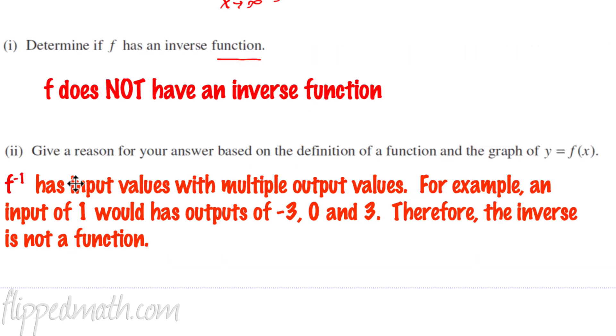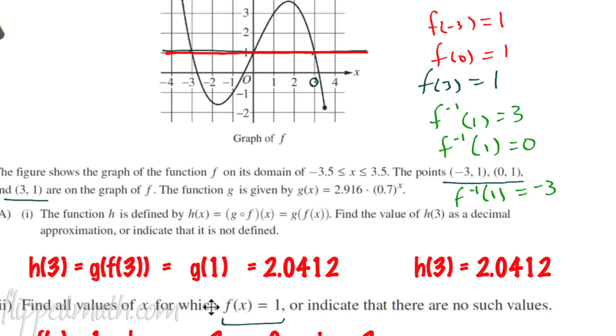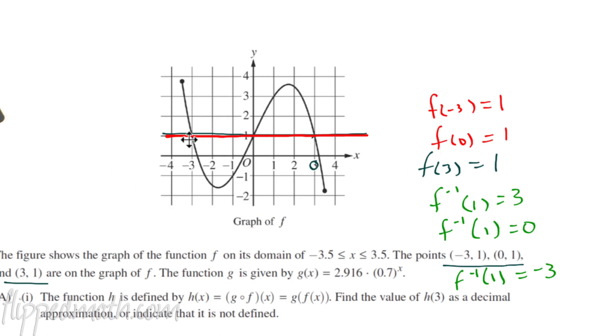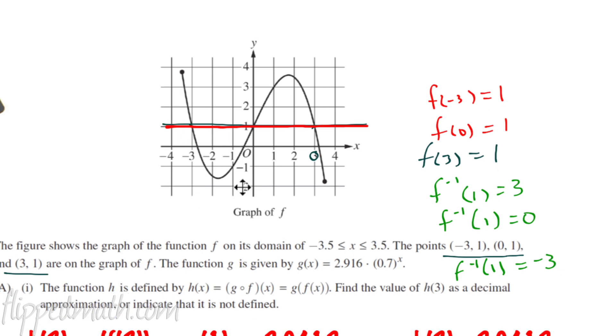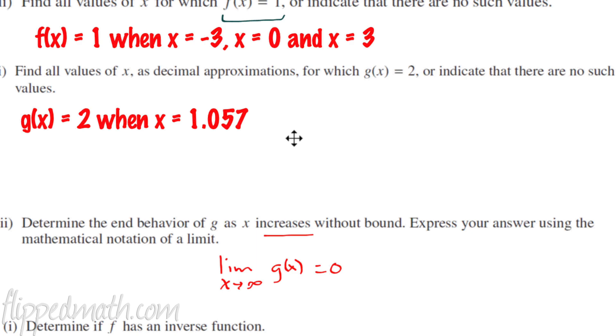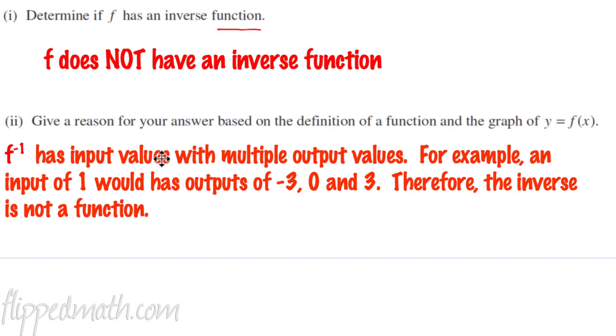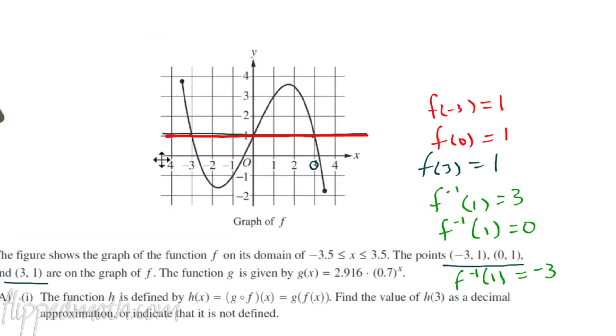f inverse has input values with multiple output values. For example, an input of one would have output values of negative three, zero, and three. Therefore, the inverse is not a function. And here's the deal. Some teachers teach that a horizontal line test here will determine if the function is invertible or the inverse is a function. But that's not good enough according to the scoring rubric. You have to mention specific values or you have to mention something about what a function is with unique inputs having unique outputs. So that's basically it. That's number one for FRQ.